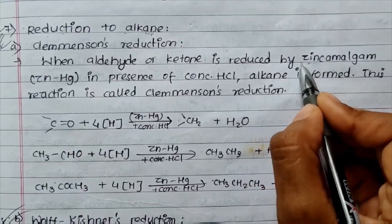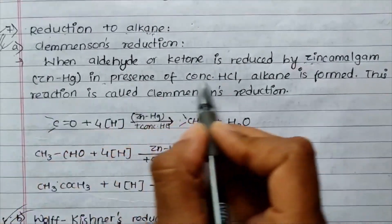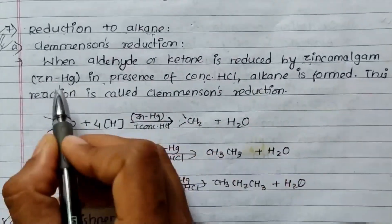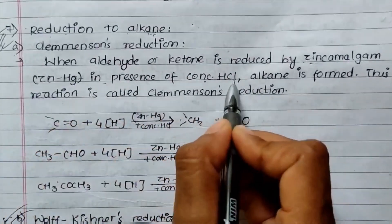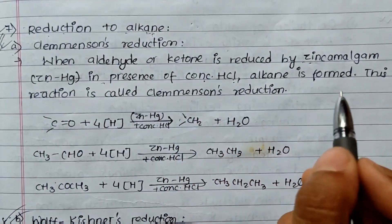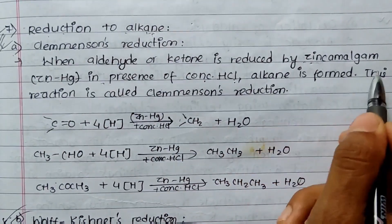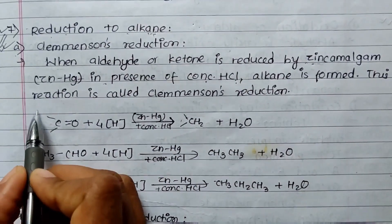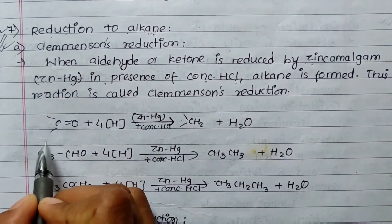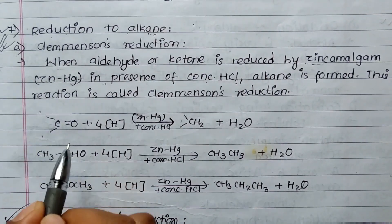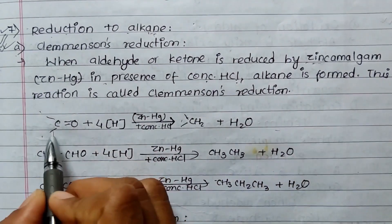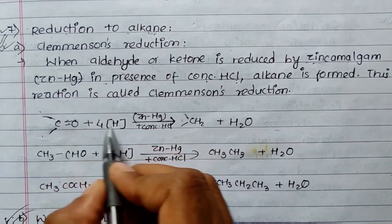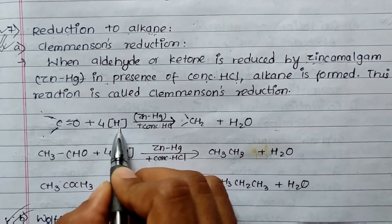In presence of HCl, this reaction is called Clemmensen reduction. This is C double bond O, and this is CH3, and CH3. This is the formula. If you want to use the alkene, you can use the alkene. This is the Zn and HCl reagent.